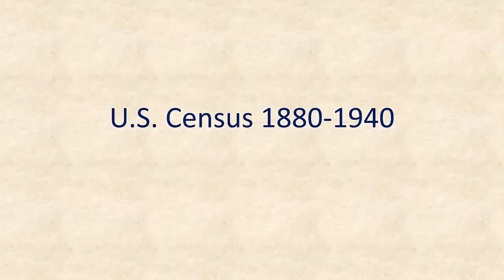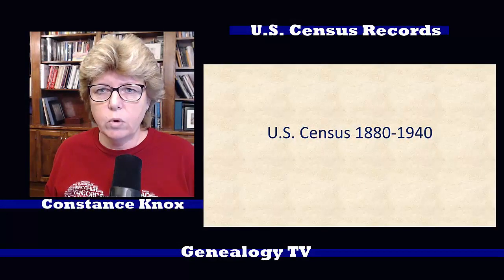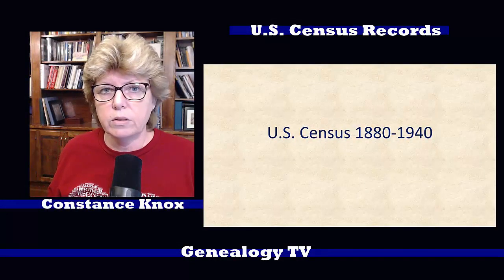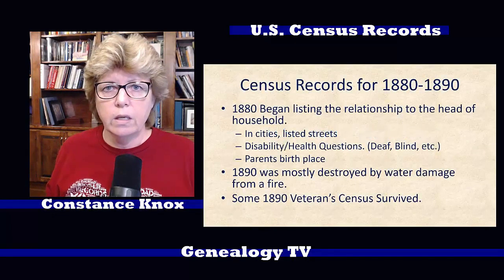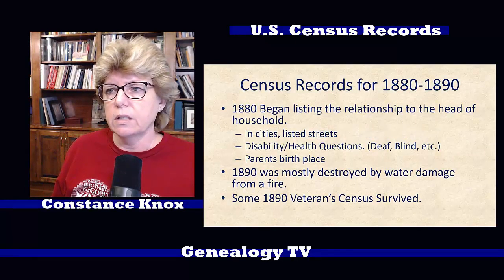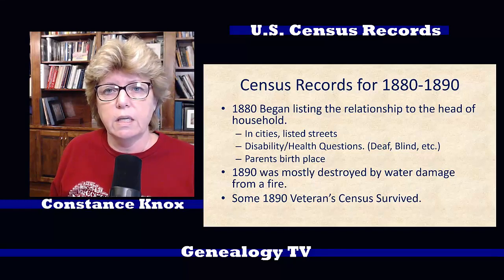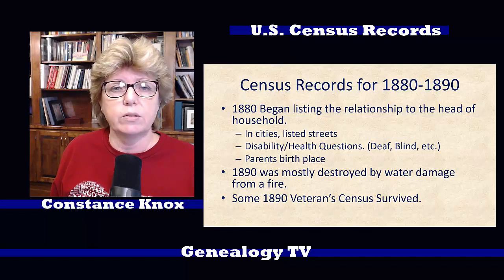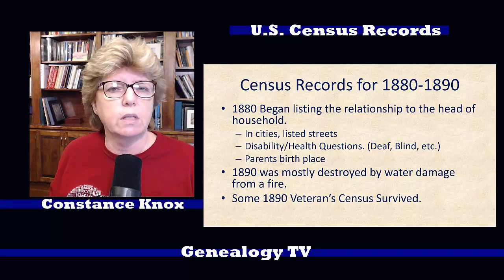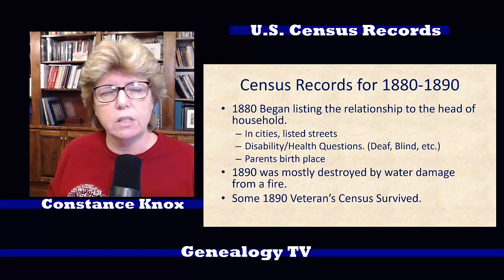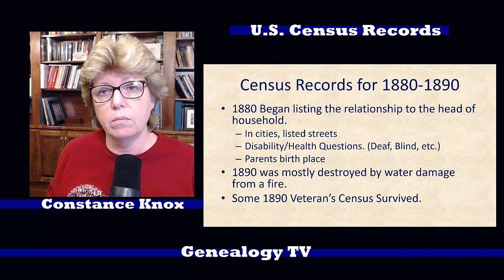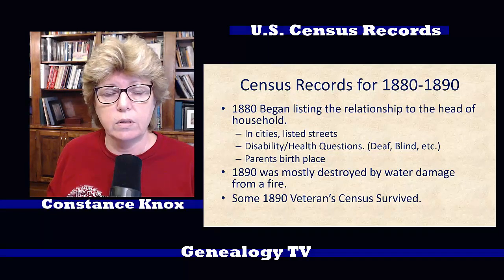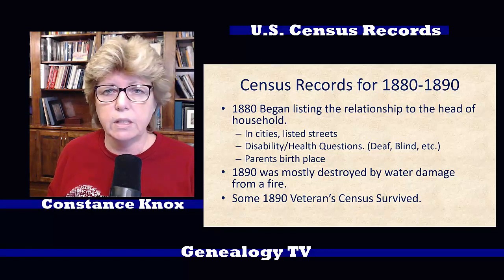Moving on to the 1880 and to the 1940 census — now we're moving into an era where there's a little bit more information. In 1880, they began listing the relationship to the head of household, and in cities they listed the streets, which was kind of cool. There are also health questions, usually in the form of disabilities — deaf, blind, insane, idiotic — a variety of different labels they used. They also started adding parents' birthplace, which is important.